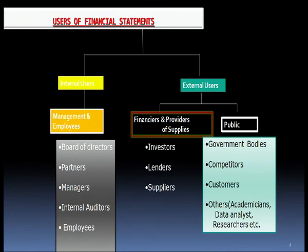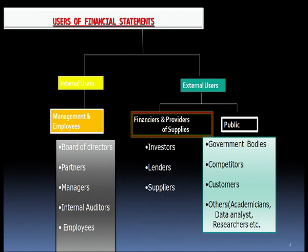Before we go to ratio analysis, let us see who are the users of financial statements for whom we are going to do the ratio analysis. We have internal users and external users. The internal users are all those who are working inside the firm — right from top level management, the board of directors, the partners, the promoters, the managers at various levels, the internal auditors, and the employees. They are all keen to know the results.